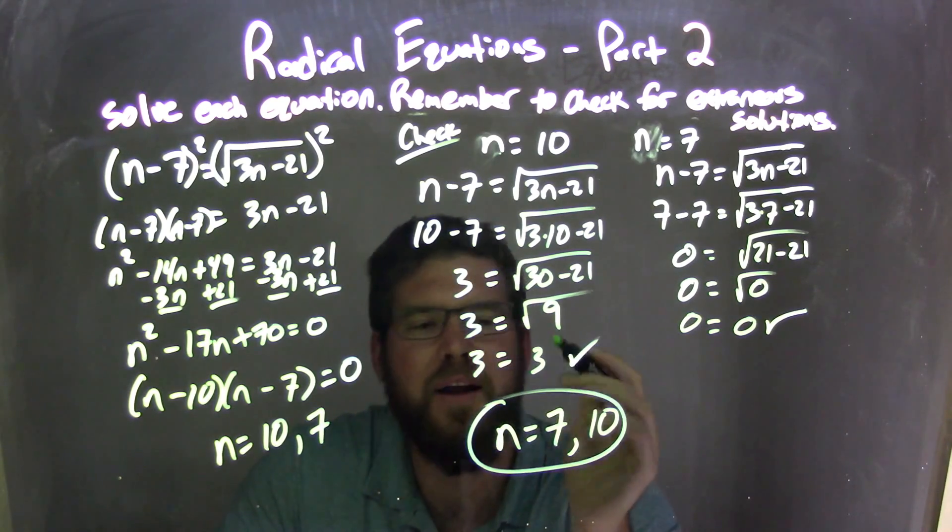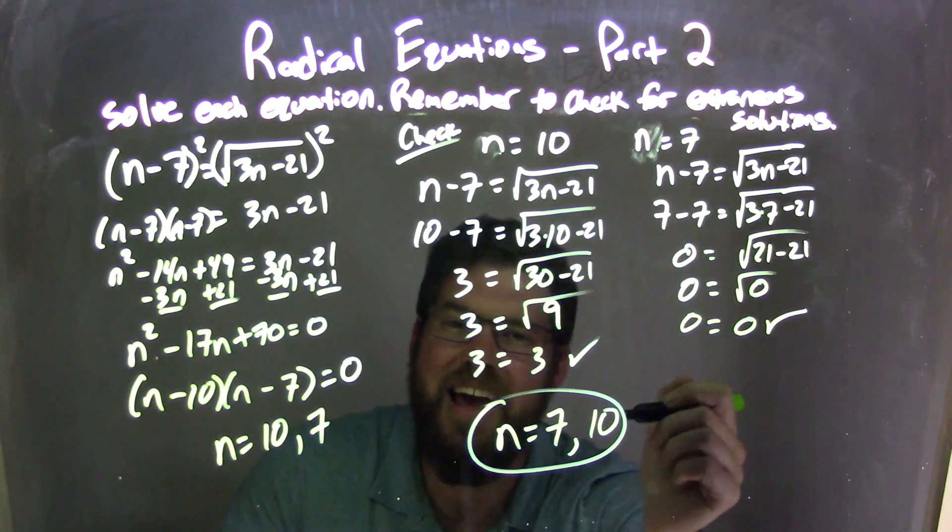I wrote it from least to greatest. My two solutions are n equals 7 and n equals 10.